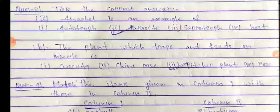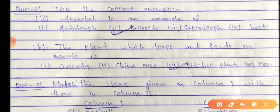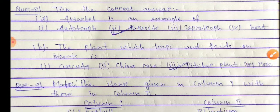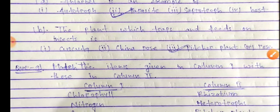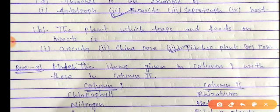Tick the correct answer. In number A, Amar Bel is an example of a parasite. The plant which traps and feeds on insects is called a pitcher plant.